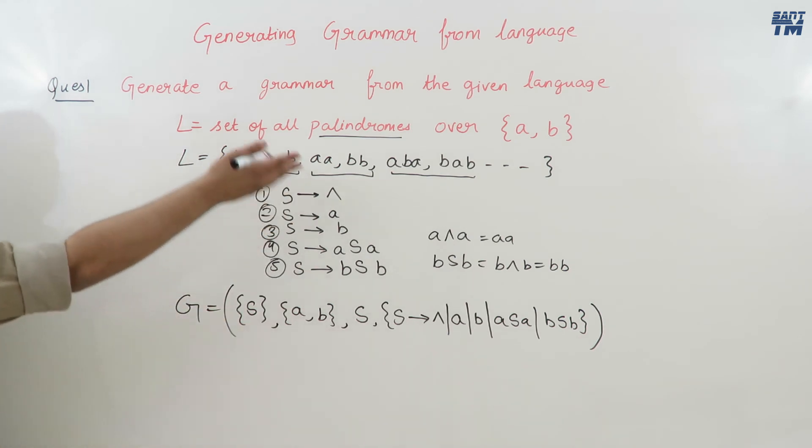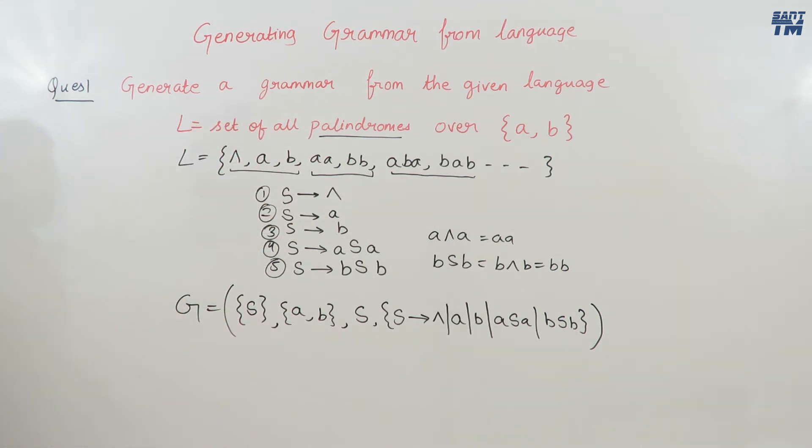You can verify that using these production rules you will get all strings which are palindromes, so this language is generated. In the next video we will study another example of the same kind. If you have any doubts, comment in the comment section or drop an email at the address in the description. Please like, share, and subscribe. Thank you.